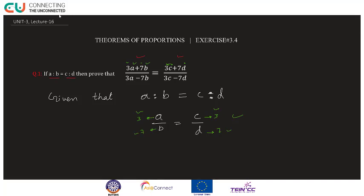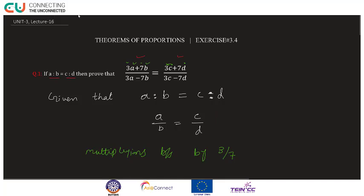So, hum dono sides ko 3 upon 7 se multiply karenge. Mujhe kaise pata chala ki 3 upon 7 se multiply karna hai? Maine aapko samjha diya: 3 upon 7 se isliye multiply kar rahe hain kyunki yahan pe A ke saath 3 aur B ke saath 7 multiply ho raha hai.